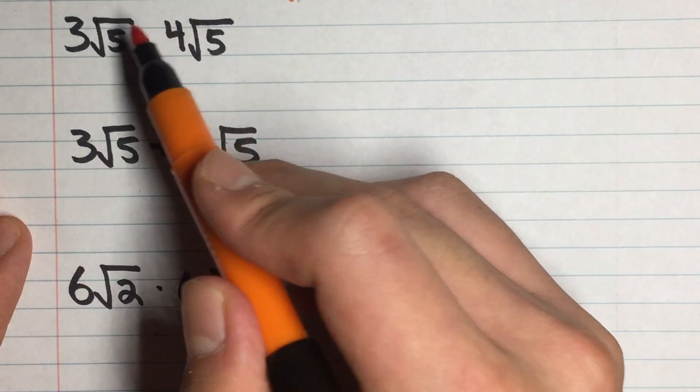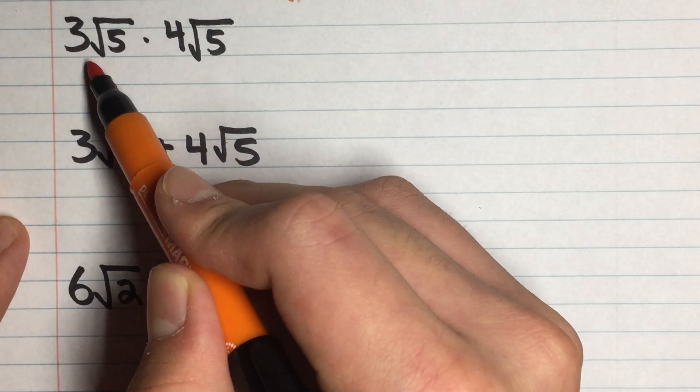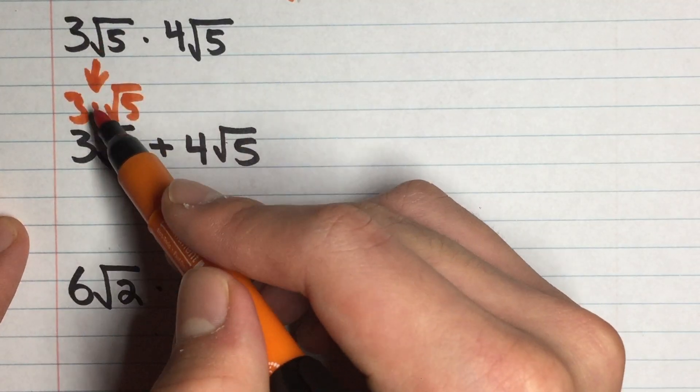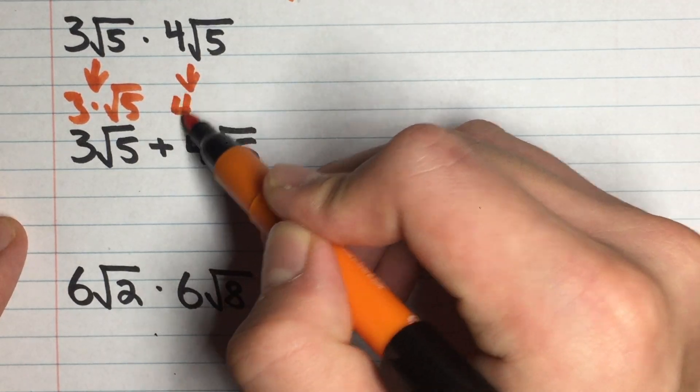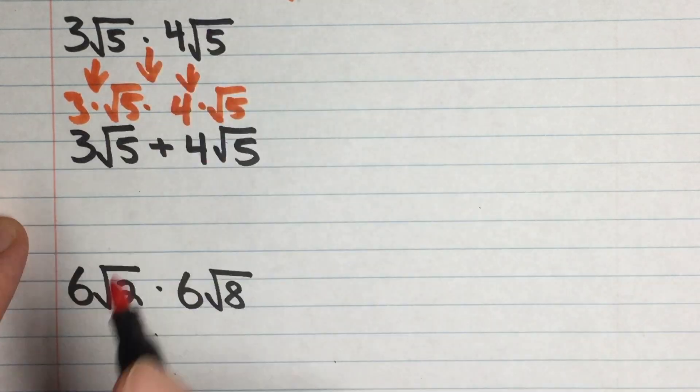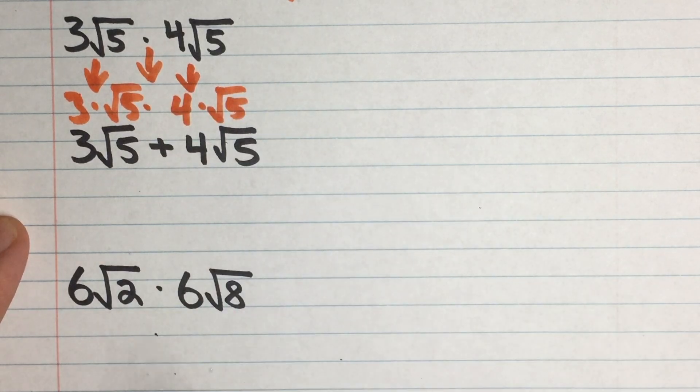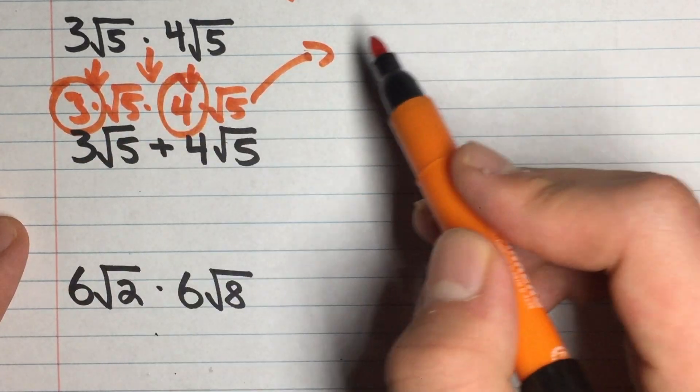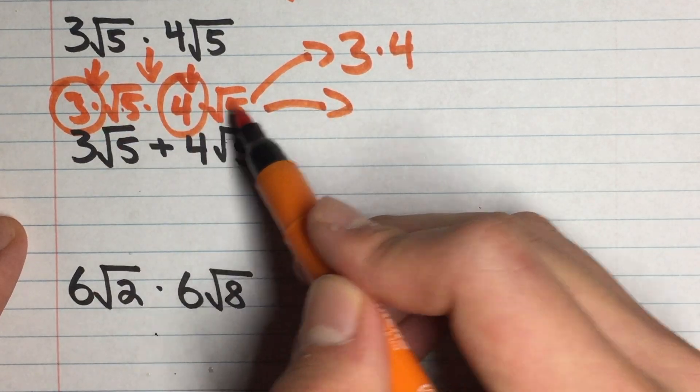Alright, now we have 3 root 5 times 4 root 5. So we could think of this as 3 times root 5, because it's just the same thing. They just didn't put the dot there to indicate multiplication. And for this one, we could write this as 4 times root 5. And there's a multiplication sign here, so we just bring that down. So right now we have 3 times root 5 times 4 times root 5. Now, let's try to break this down into two parts. So first, we have 3, right? And we also have 4. So we could write this as 3 times 4. But we also have root 5 times root 5, so let's write that out.